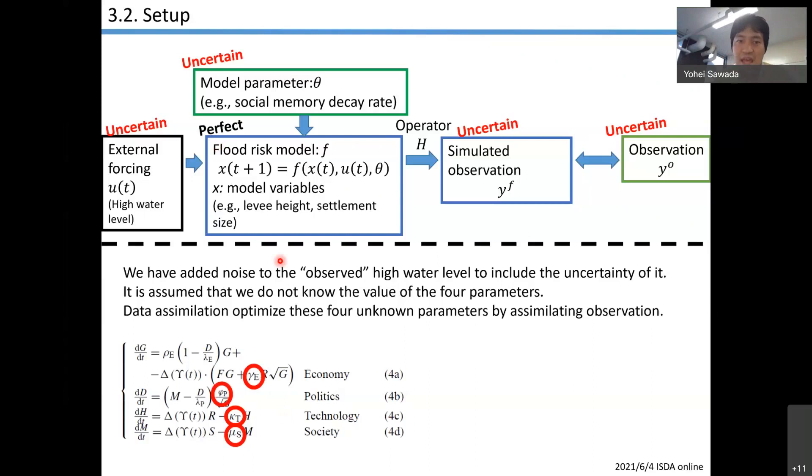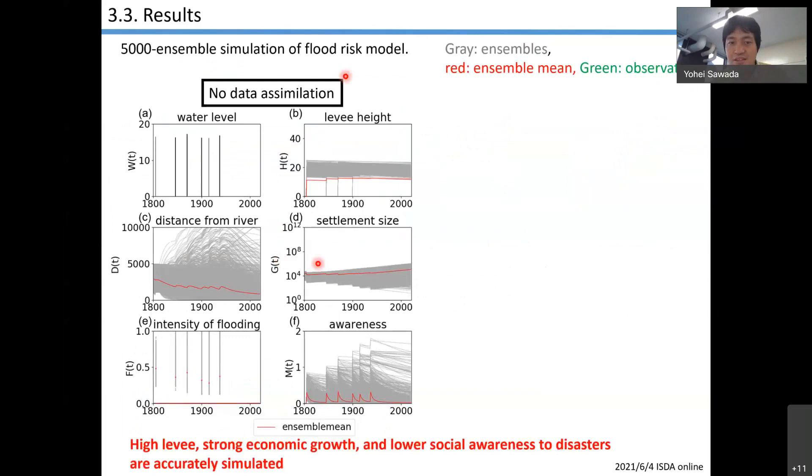This is 500 ensemble simulation of the flood risk model in Rome. We have four state variables: levee height, distance from river, settlement size, and awareness. Gray lines are each ensemble and red line is ensemble mean. You can see here we have two bifurcated scenarios without data assimilation. One scenario has people constructing really high levees. They can protect the city and continue economic growth. But they forget about flood risk and move their city toward the river. The other scenario has zero levee level. They couldn't construct levees due to financial limitation, so they continuously get damaged by severe floods. But they can keep high level of memory of floods, so their city is located far from the river.